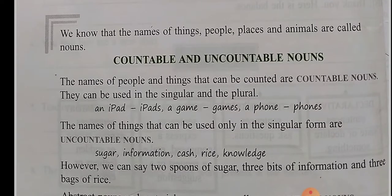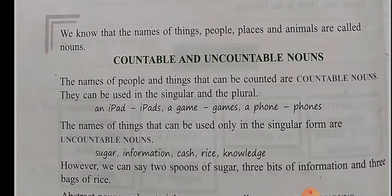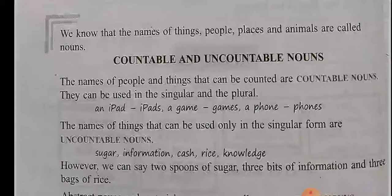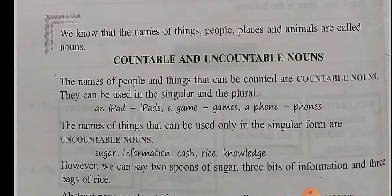We know that the names of things, people, places and animals are called nouns. Nouns can be classified into two categories: countable and uncountable nouns. The names of people and things that can be counted are countable nouns. They can be used in singular and the plural form.